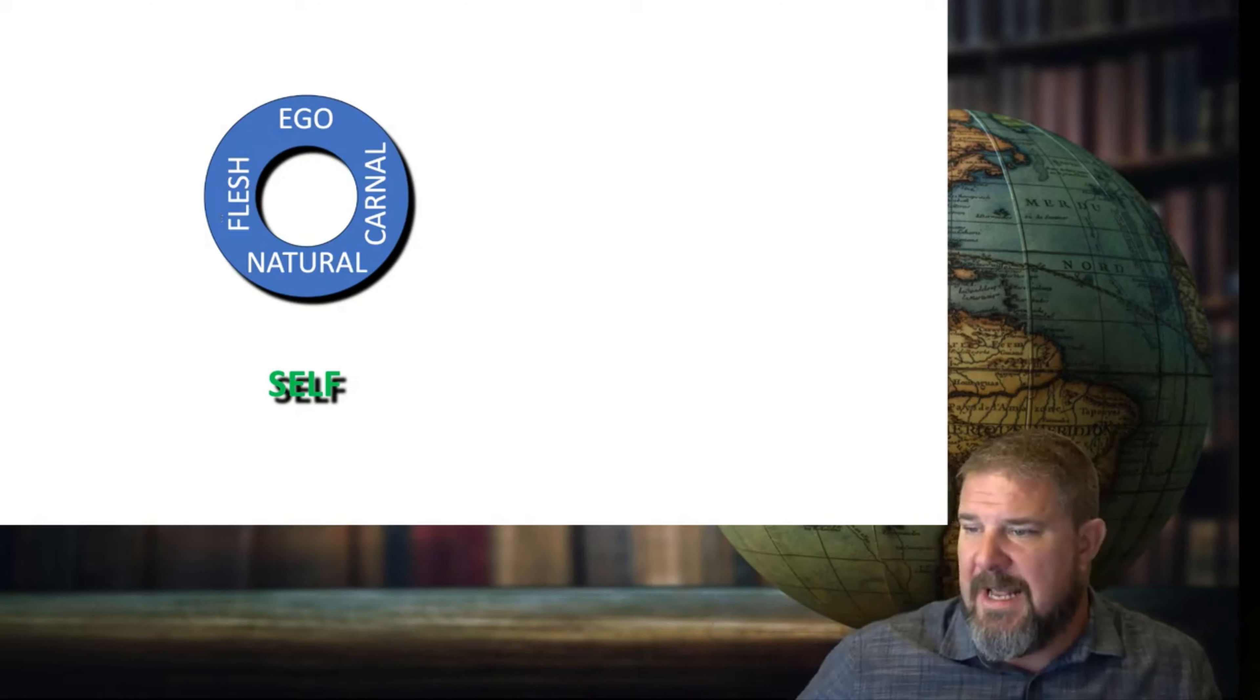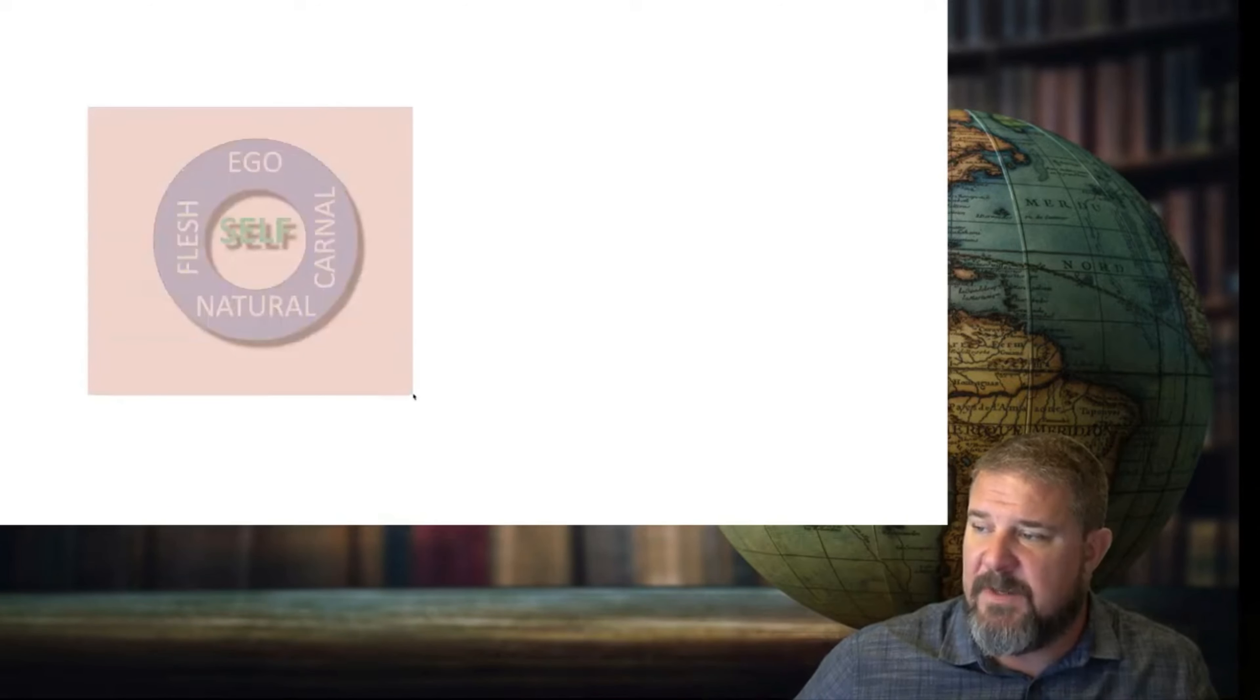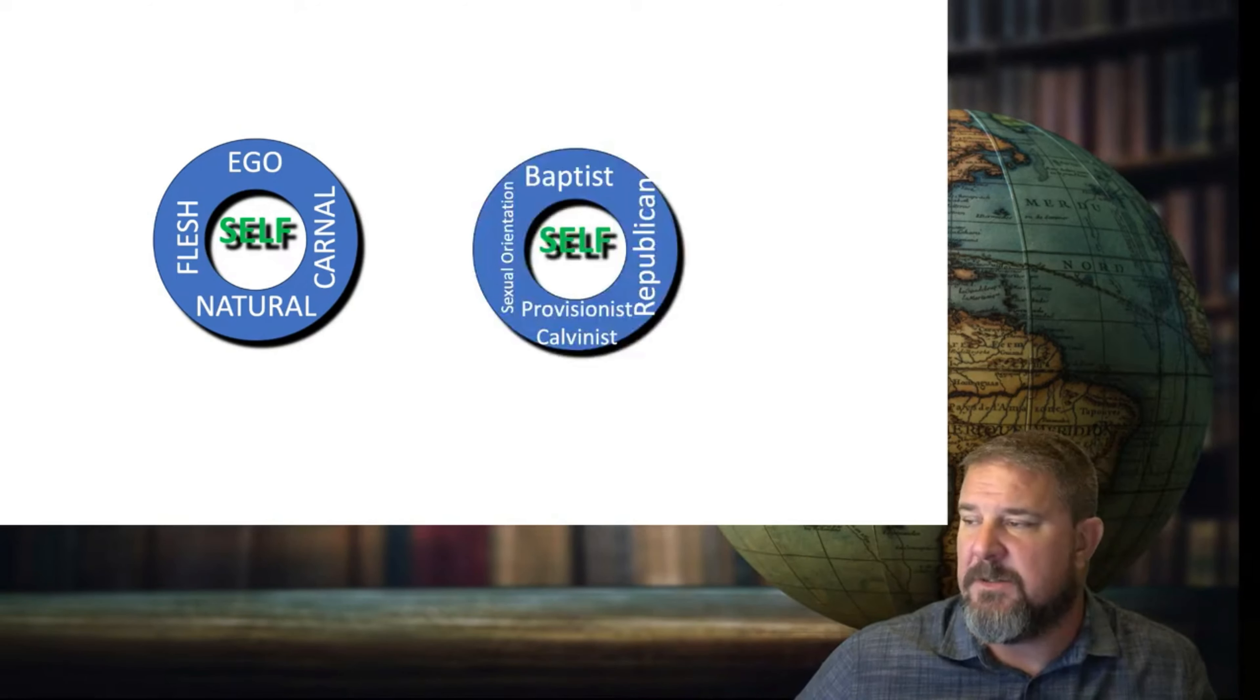So what we're going to have this look like, we're going to combine these two and put the authentic self inside the ego self. And most of our concepts of self is this blue outer shell. We have no idea what the authentic self is. And that comes as a matter of discovery typically over many years.